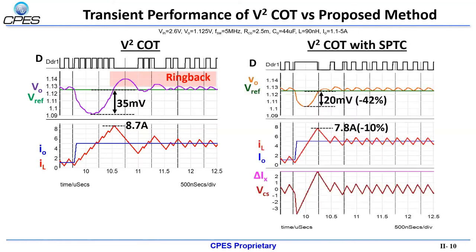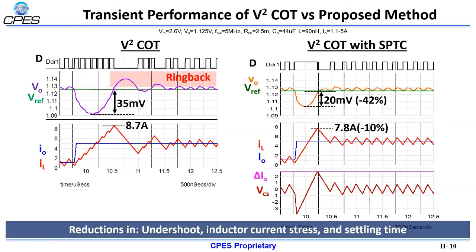Here we show a comparison of the v-square constant on-time control with the proposed method. We can see that for the same operation, the v-square constant on-time control can have a very large undershoot and ringback, while the proposed state plane trajectory control has very reduced undershoot and no ringback, as well as reduction in inductor current stress and settling time.